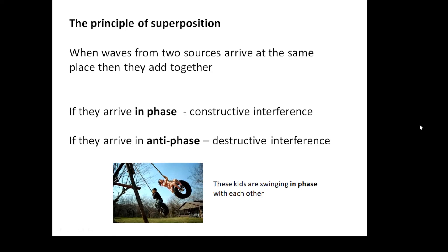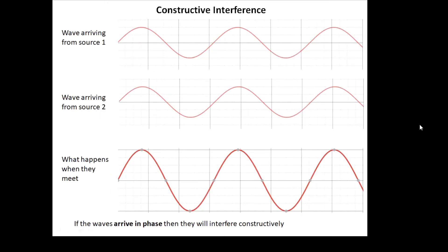In phase means they go up and down together — like these two kids on swings, swinging together; they are in phase with each other. So if the two waves arrive in phase, then we get constructive interference and we end up with a big wave. Look at these two diagrams: waves arriving from source one, waves arriving from source two.